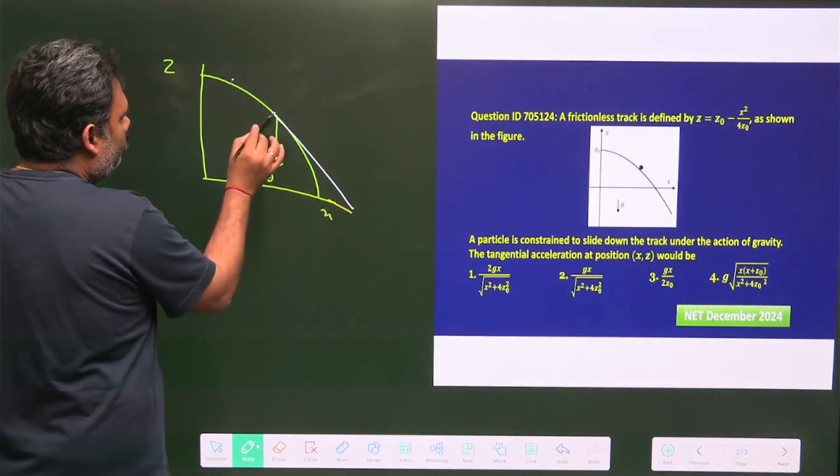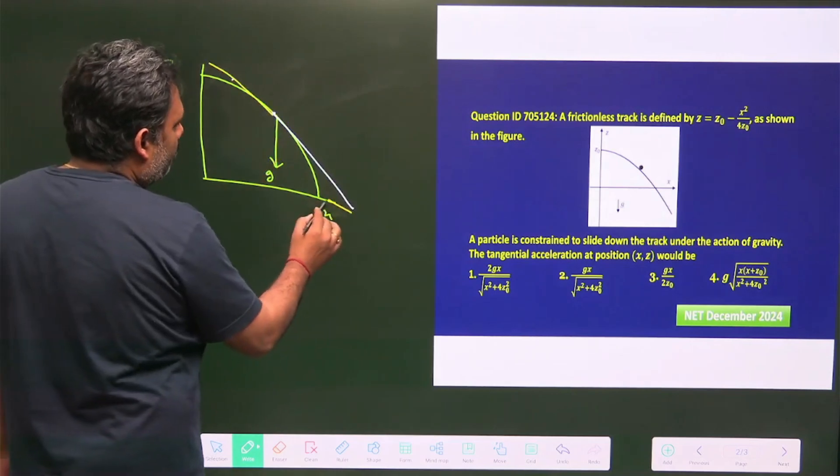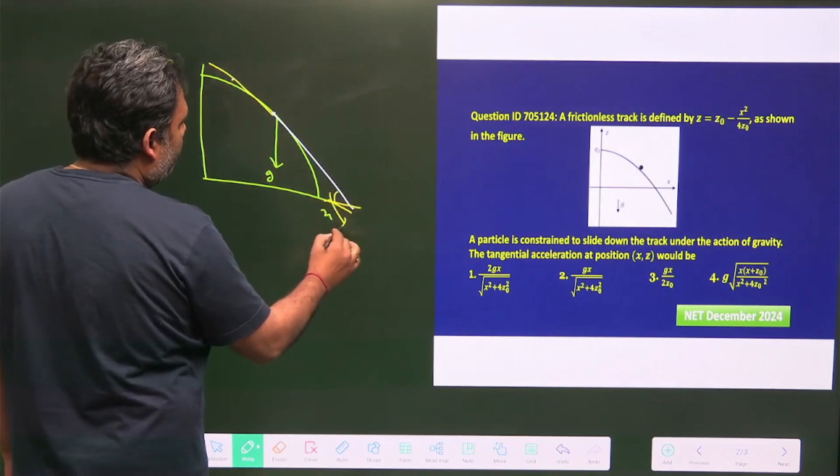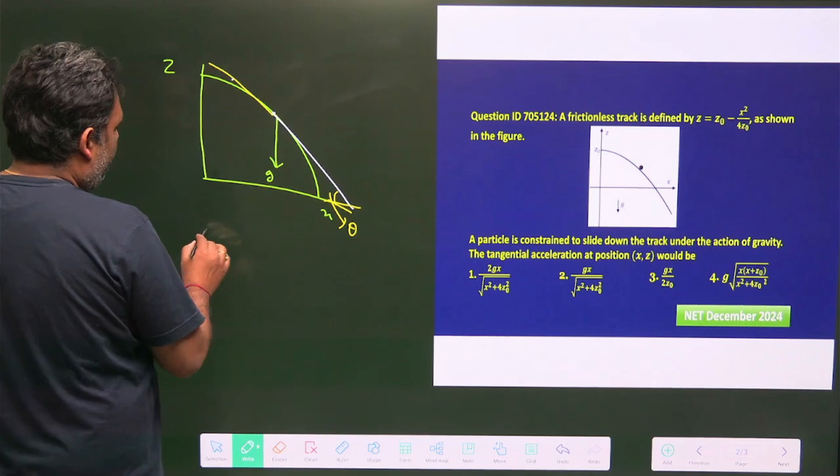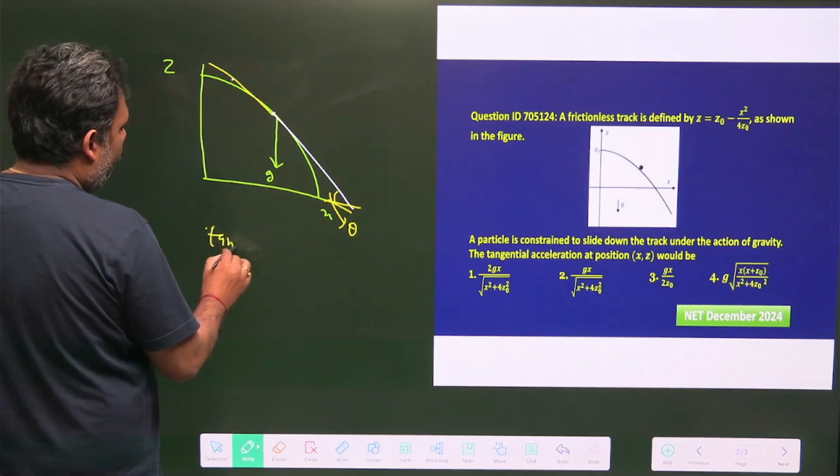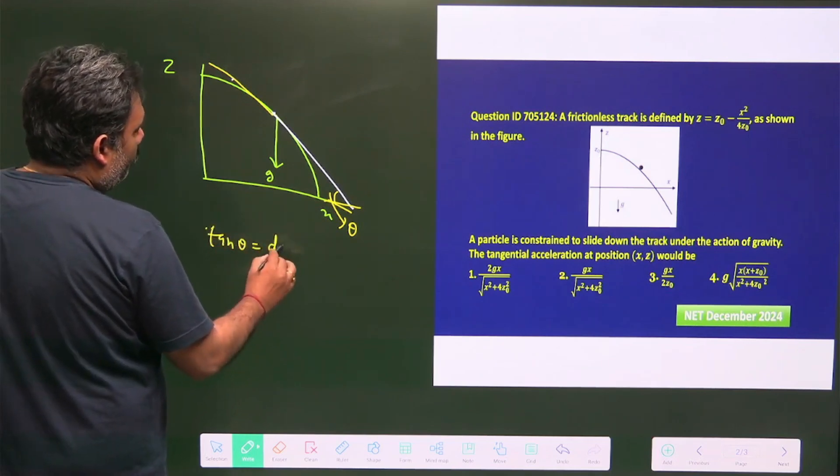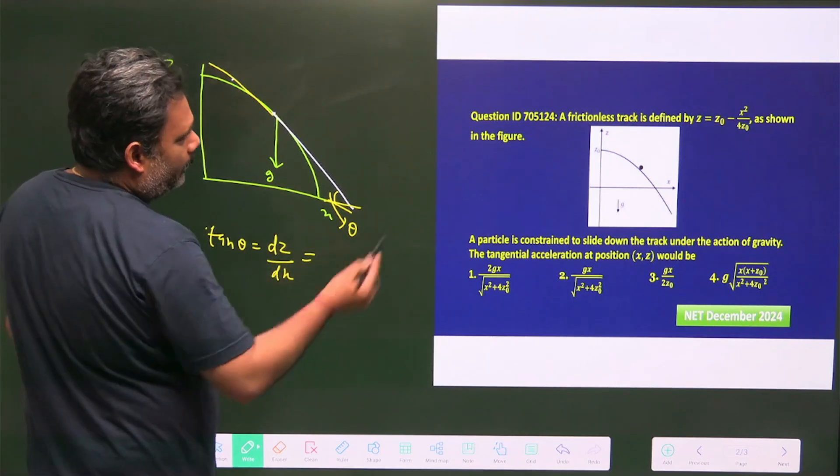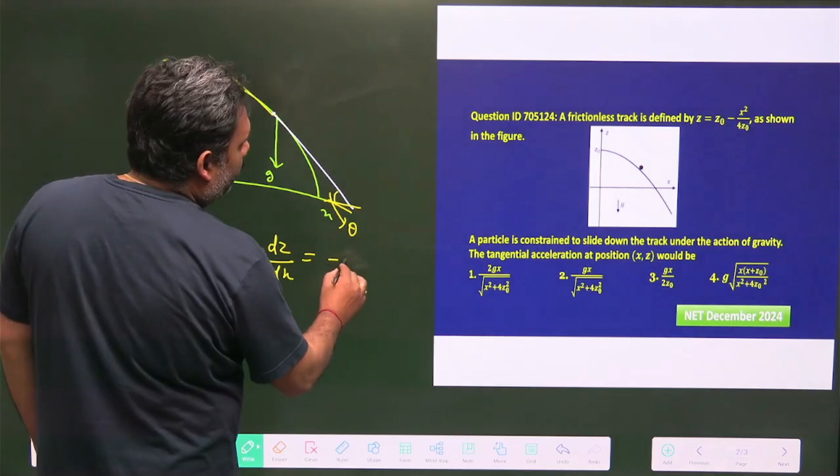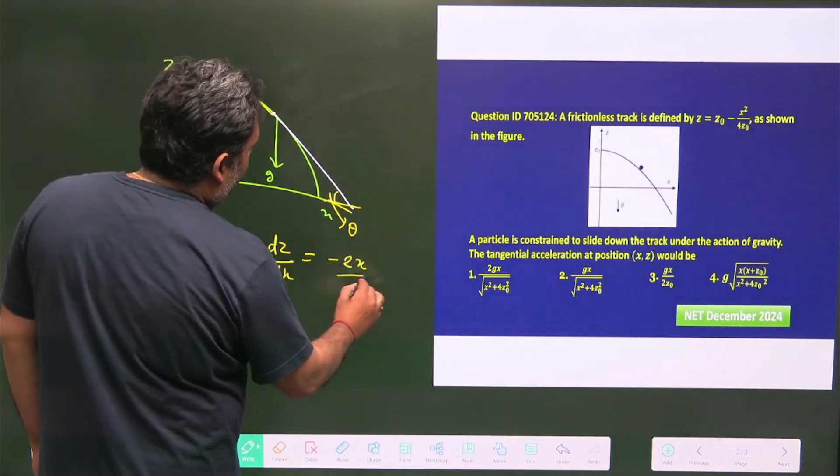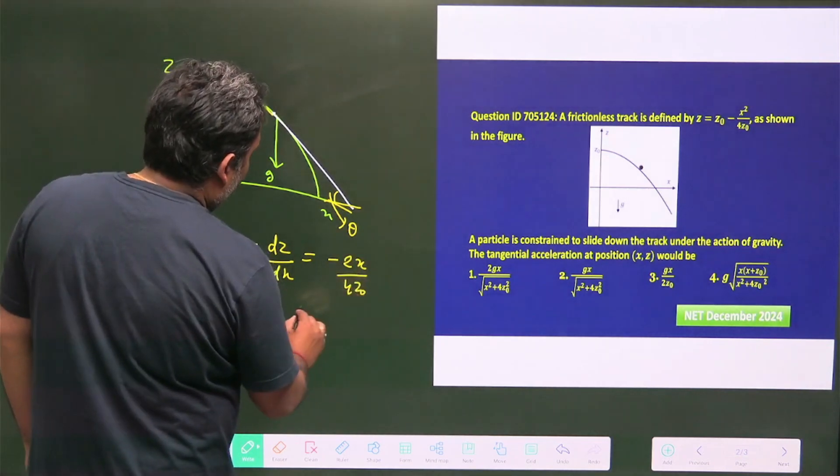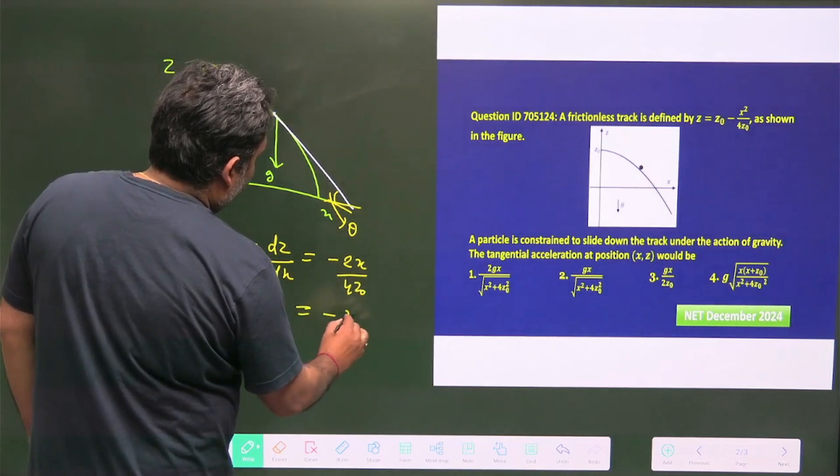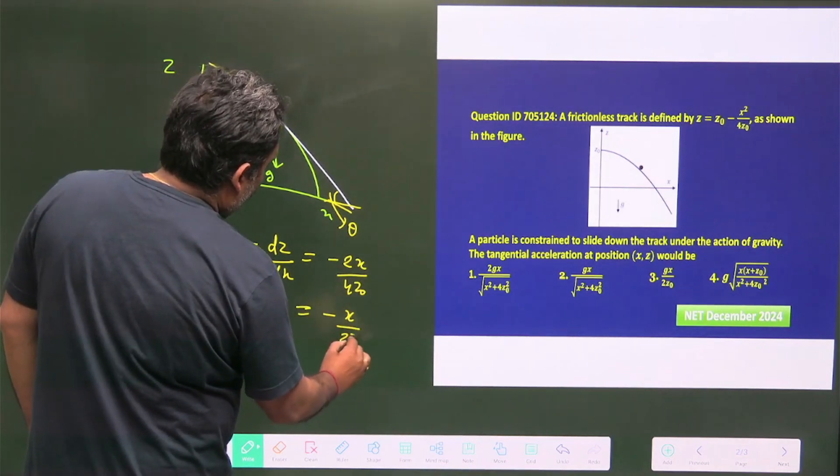So from the calculus we know that this angle is theta and this tan theta we all know is nothing but dz upon dx. From there we can easily differentiate it, that will be minus 2x upon 4z0 and that value is equal to minus x upon 2z0.